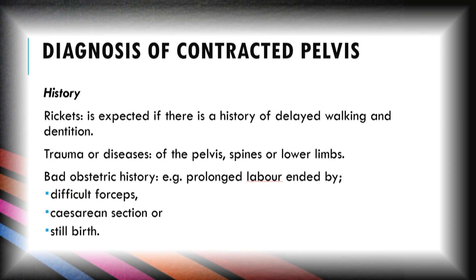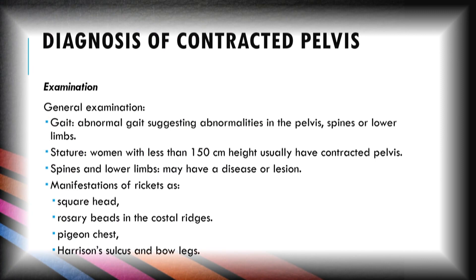For diagnosis of contracted pelvis, history collection and physical examination are performed. In history, we ask about any history of rickets — expected if there is history of delayed walking and dentition — any trauma or disease in the pelvis, spine, or lower limbs, and any bad obstetric history such as prolonged labor ended by difficult forceps, caesarean section, or stillbirth. In general examination, we check the gait of the patient; abnormal gait suggests abnormalities in the pelvis, spine, and lower limbs.